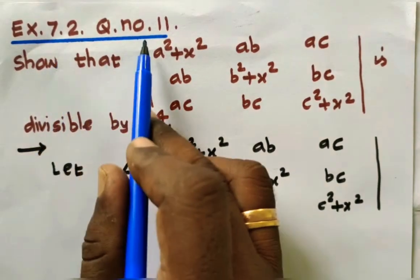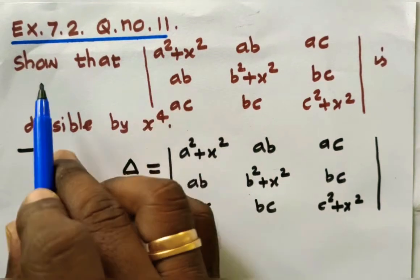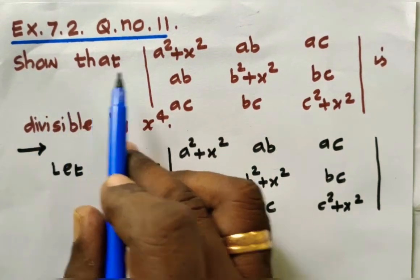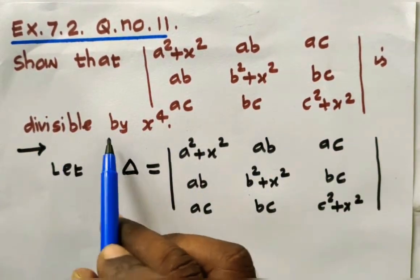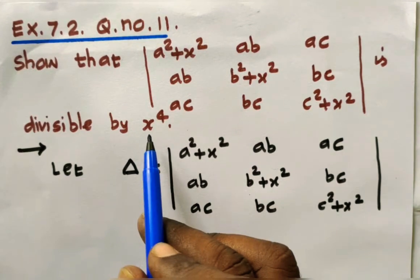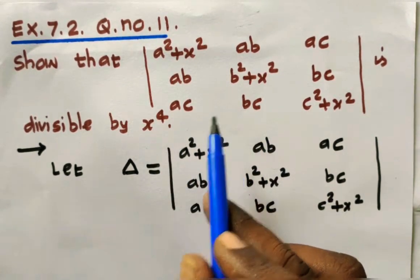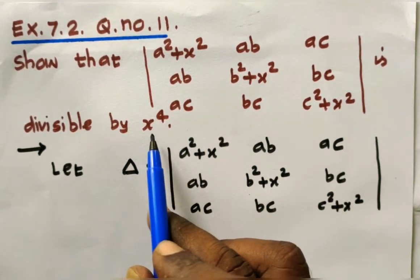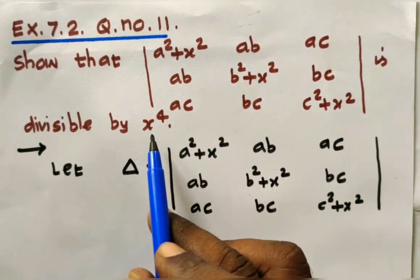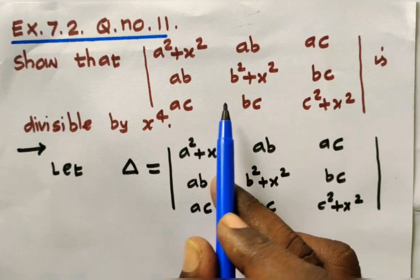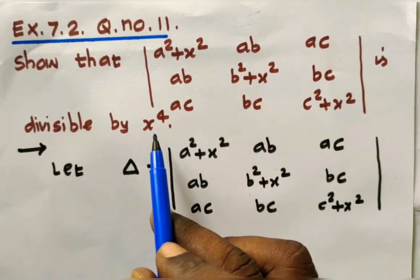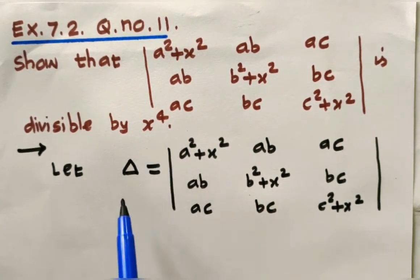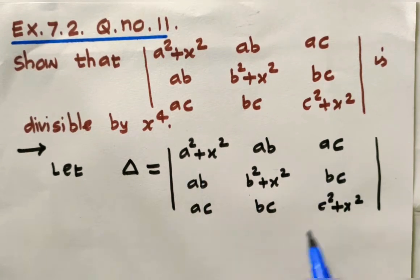Exercise 7.2, question number 11: Show that the given 3×3 determinant is divisible by x to the power 4. So we need to find a determinant value which is divisible by x⁴, meaning the determinant value is a multiple of x⁴. Let delta be equal to the given 3×3 determinant.